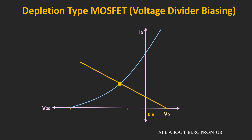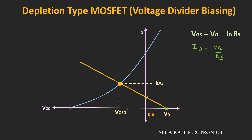Graphically, the yellow line shows the load line. When Id equals zero, VGS equals Vg, and when VGS equals zero, Id equals Vg divided by Rs — joining these two points gives the load line. Extending the line to intersect the transfer curve gives the operating point. The variation in the operating point with voltage divider biasing is lesser than with self-bias. Compared to all three biasing configurations, the voltage divider biasing is the most robust in terms of operating point stability.